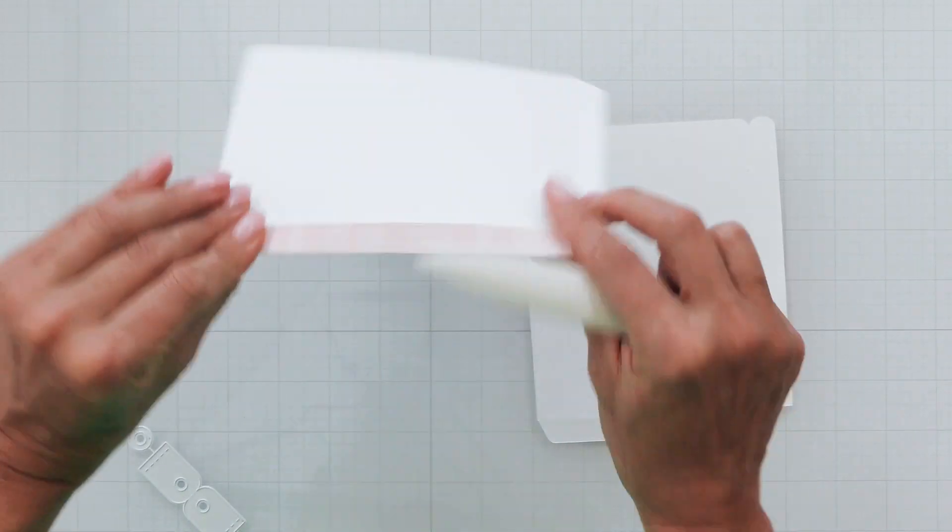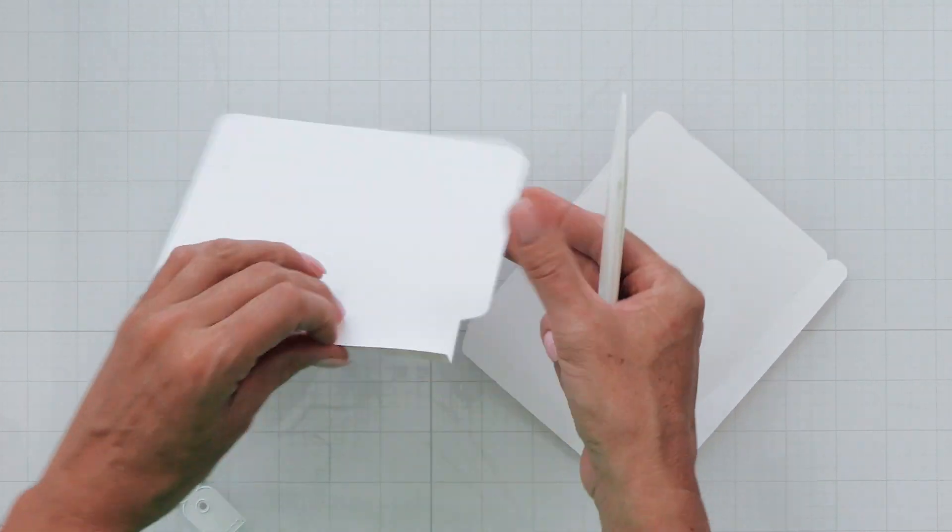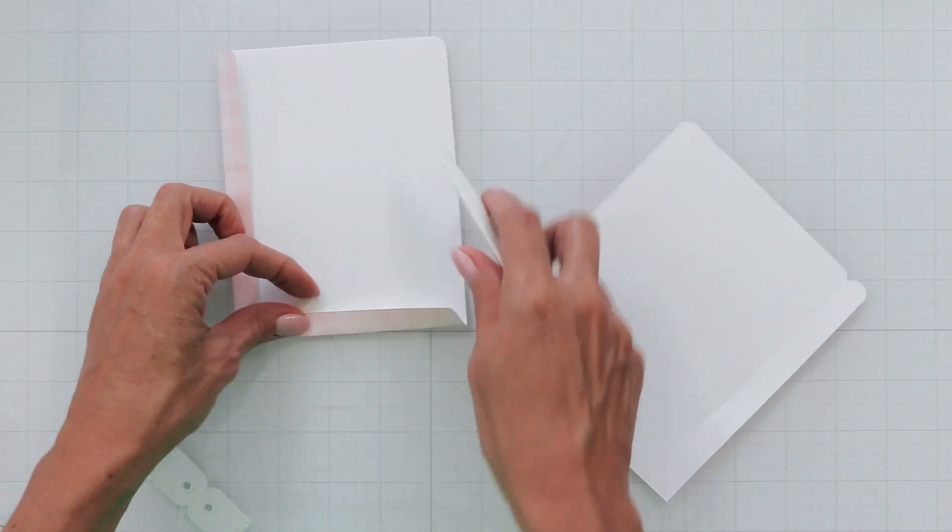Now let's begin by folding over on the four score lines, both of the long sides and both of the short sides.